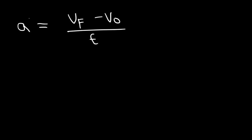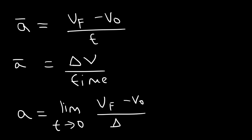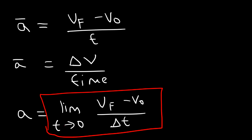Average acceleration equals the change in velocity — delta v — over time. For instantaneous acceleration, as t approaches zero (when the change in time becomes very small), that expression gives you the instantaneous acceleration. But over a significant time interval, the equation gives you the average acceleration. Just as speed tells you how fast the distance is changing, acceleration tells you how fast the velocity is changing.